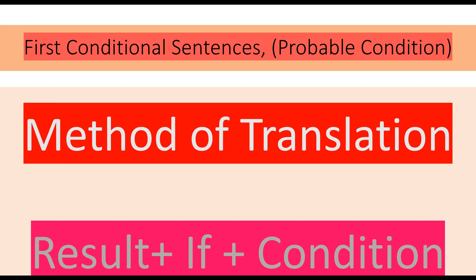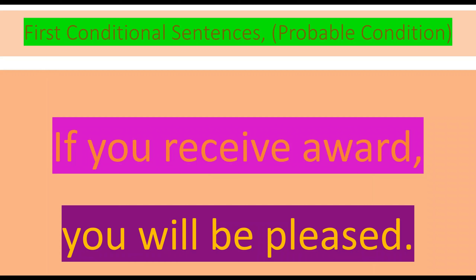A result is mentioned first, and then 'if' and the condition is mentioned — for example, 'If you receive an award, you will be pleased.' Now it's the opposite: we start with 'if' and a comma is added. But if you are writing the consequence or main clause in the beginning, no comma will be placed between the two parts of the sentence.